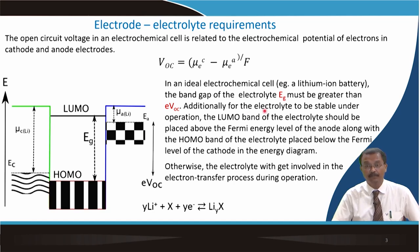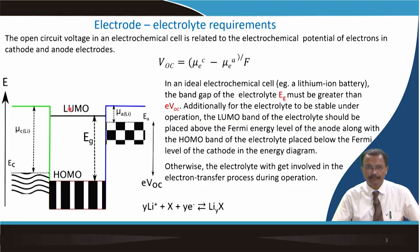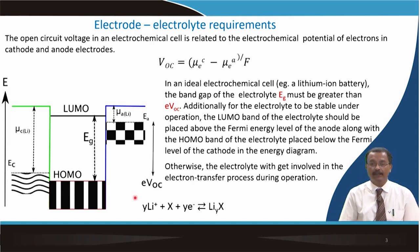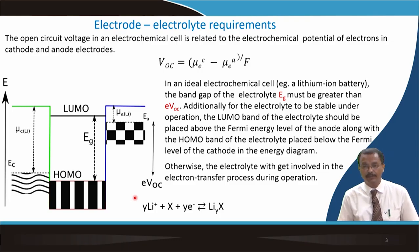E_g must be greater than that value. In addition, for the electrolyte to be stable under operation and not dissociate, the LUMO band of the electrolyte should be placed above the Fermi energy level of the anode. The Fermi energy level of the anode is here, and the LUMO — the lowest unoccupied molecular orbital — should be above it. On the other hand, the HOMO band should be placed below the Fermi level of the cathode; otherwise, the electrolyte will get involved in the electron transfer process during operation.